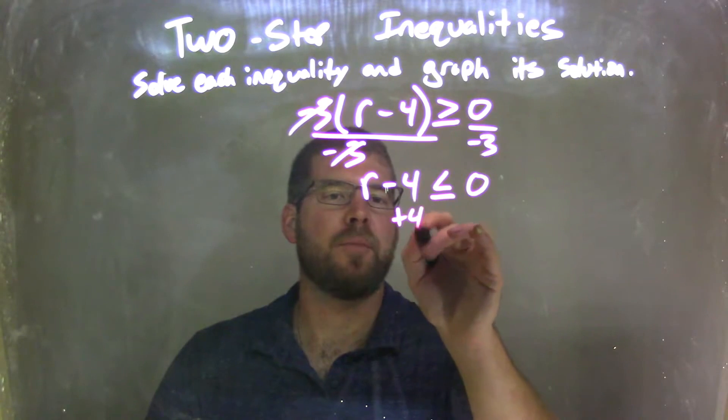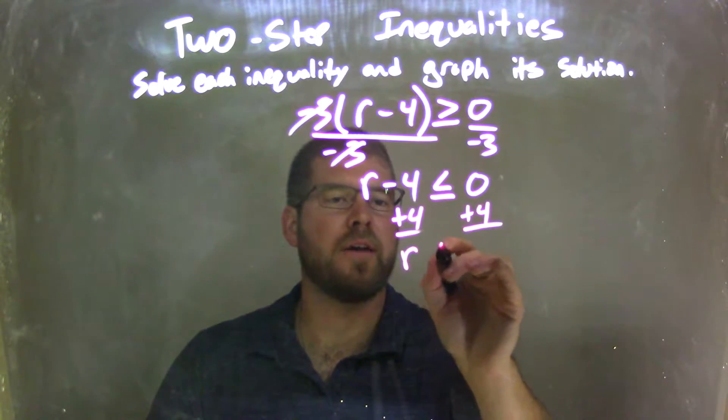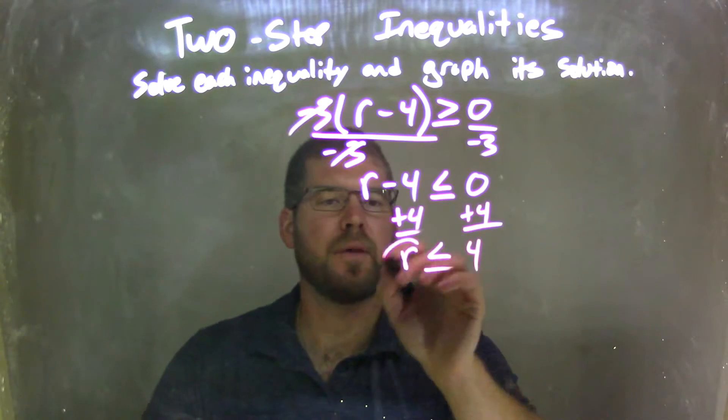I then have to add 4 to both sides here. And in doing so, I have r is less than or equal to positive 4. And that's looking great.